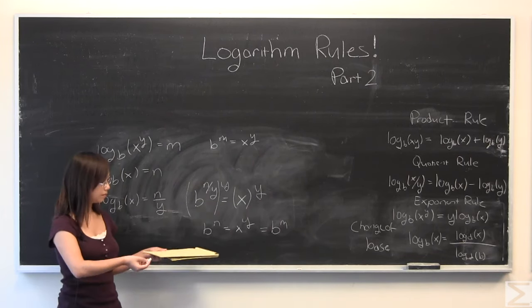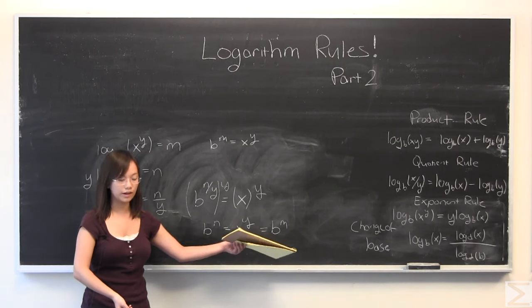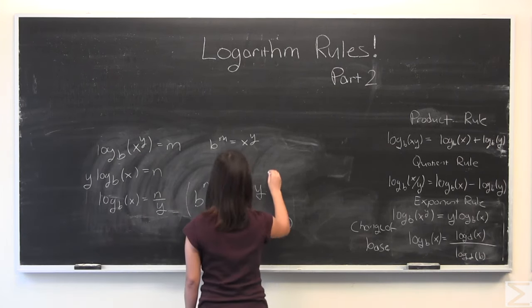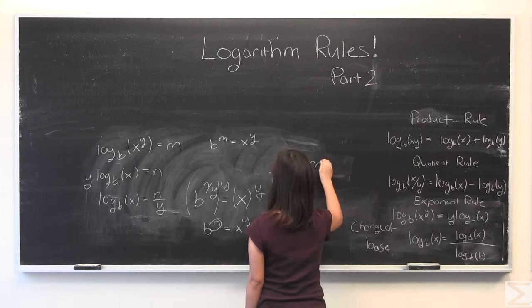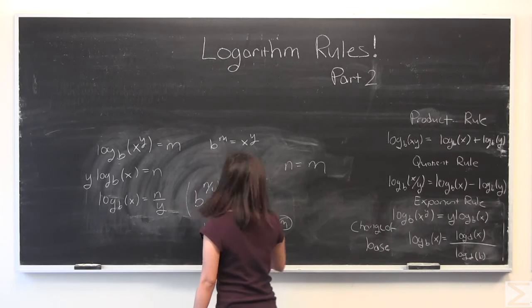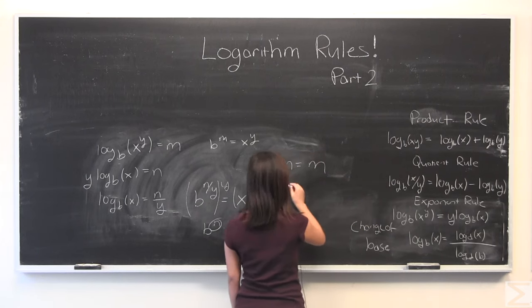And just like before, if b to the power of n is equal to b to the power of m, well, that means n has to be equal to m. n is equal to m. Then we get the exponent rule right there.